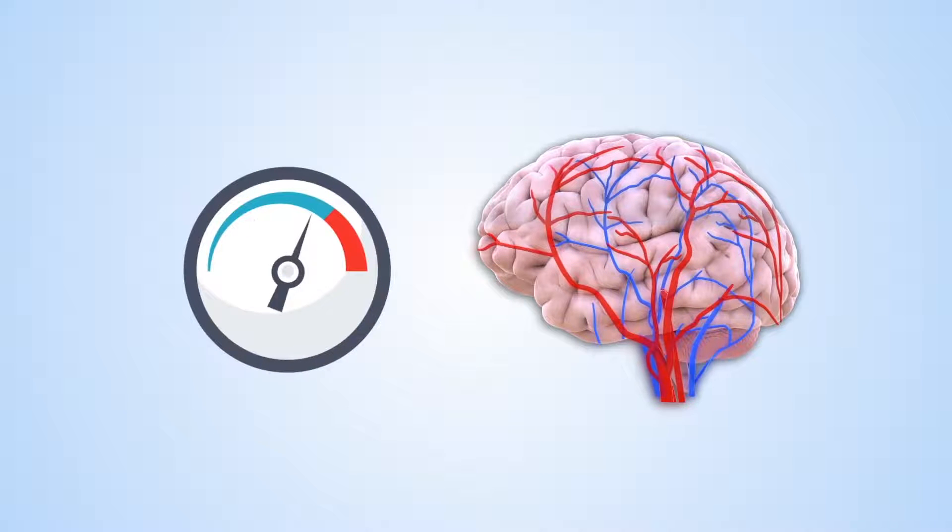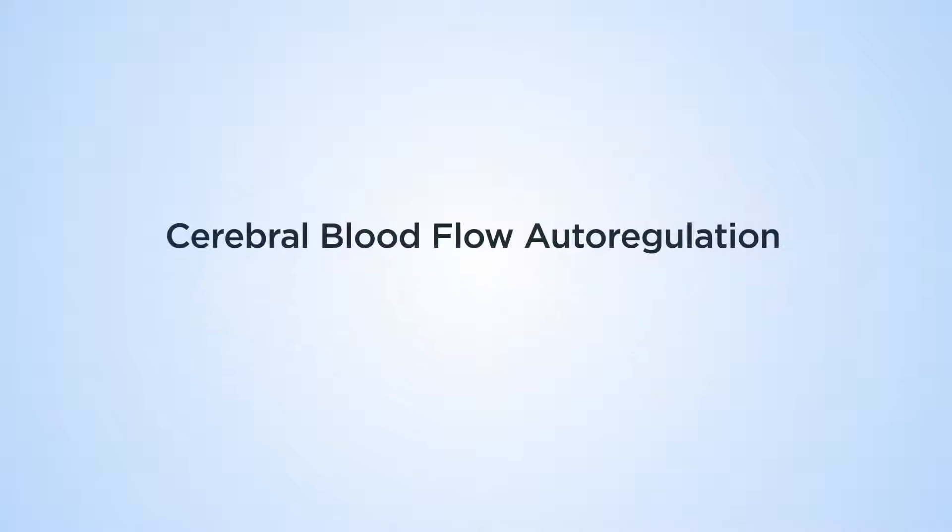Intriguingly, blood flow in the brain is controlled locally. The organ seems to control blood flow at a remarkably constant rate, despite fluctuations in arterial blood pressure. This phenomenon is known as cerebral blood flow autoregulation.